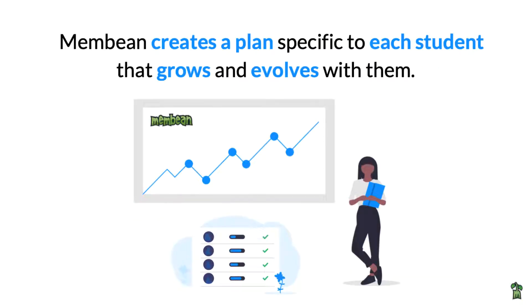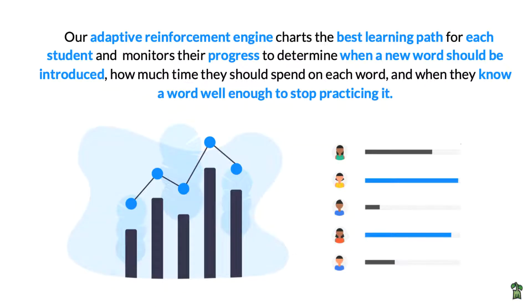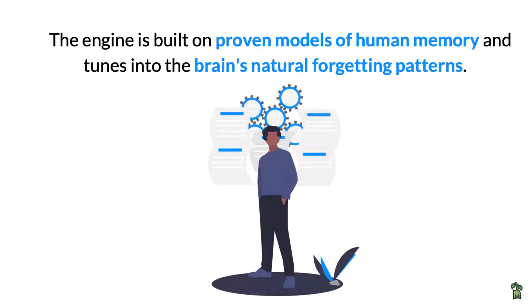Membean creates a plan specific to each student that grows and evolves with them. Our adaptive reinforcement engine charts the best learning path for each student and monitors their progress to determine when a new word should be introduced, how much time they should spend on each word, and when they know a word well enough to stop practicing it. The engine is built on proven models of human memory and tunes into the brain's natural forgetting patterns.